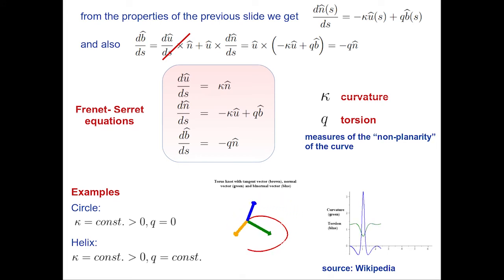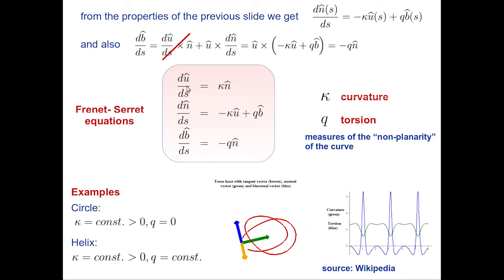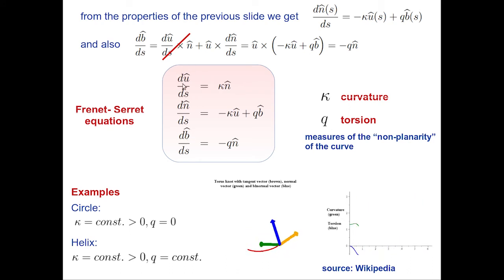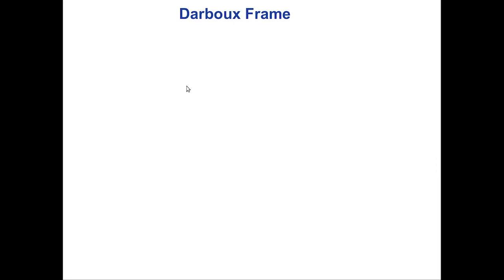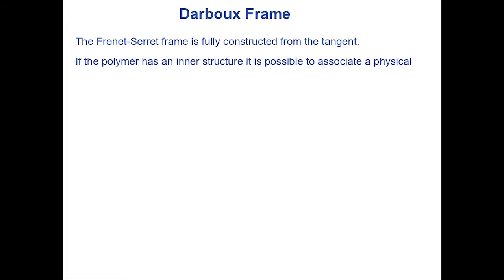This frame — u, n, b — is called the Frenet-Serret frame and is constructed solely from knowledge of the tangent. Now we introduce the Darboux frame: if the polymer has an internal structure, we can associate a physical frame with it.